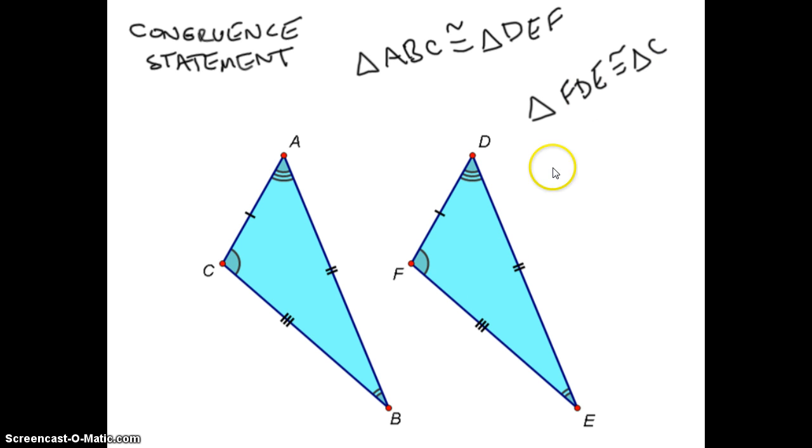And then the middle letter is D, and D goes with A, so we're going to put down an A, and then what's left, E goes with B. So there are a number of ways you could write this congruent statement correctly, a number of ways you start, but once you start, you have to be really careful with how you finish.